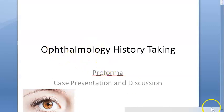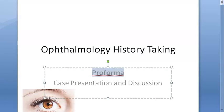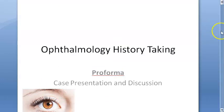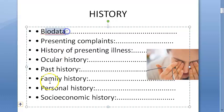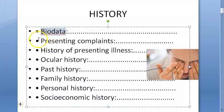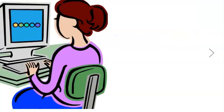Hello everyone. Let us look at ophthalmology history taking — basically we'll look at the pro forma. Just like any other history taking, you will first take the bio data: name of the person, age, address, occupation, education, socioeconomic status, and informant — whether the person is informing themselves or not.